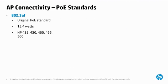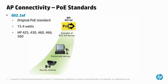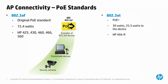802.3af is the original standard and supports up to 15.4 watts of power. This is adequate for most PoE devices, such as point-of-sale terminals, basic security cameras, and most of HP's line of access points, such as the 425, 430, 460, 466, and 560 models. 802.3at is a later standard that can supply up to 30 watts of power. For HP switches that support this feature, it is recommended that the actual device draw less than 25.5 watts of power, due to power loss over long cable runs.